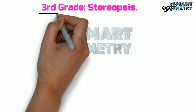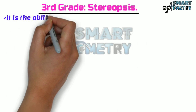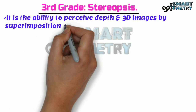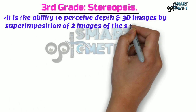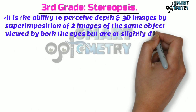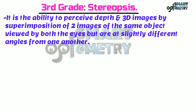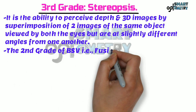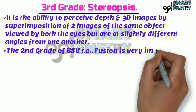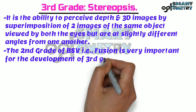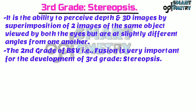Third grade: stereopsis. It is the ability to perceive depth and 3D images by superimposition of two images of the same object viewed by both eyes but at slightly different angles from one another. The second grade of binocular single vision, i.e., fusion, is very important for the development of the third grade, stereopsis.